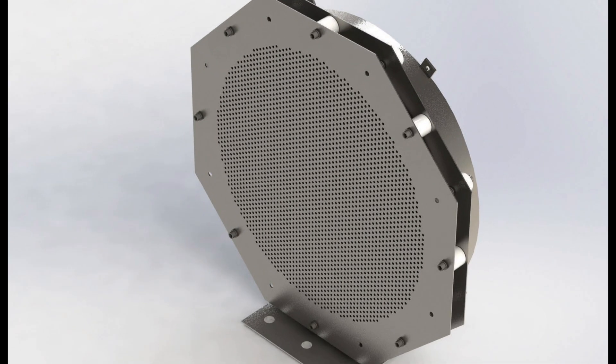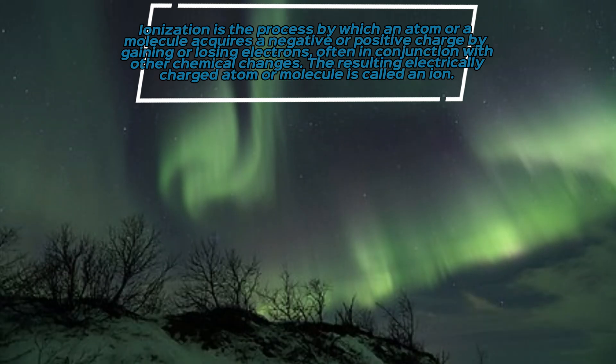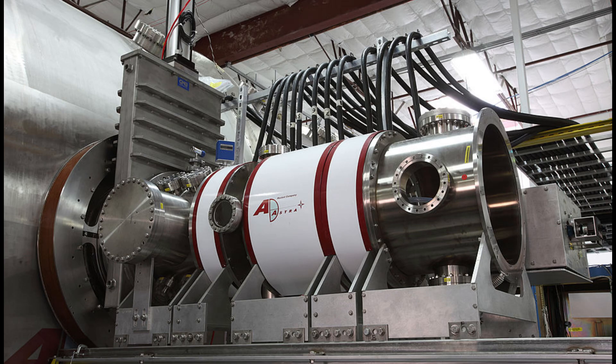Gridded electrostatic ion thrusters development started in the 1960s and since then, they have been used for commercial satellite propulsion and scientific missions. Their main feature is that the propellant ionization process is physically separated from the ion acceleration process.